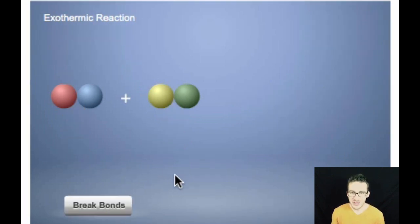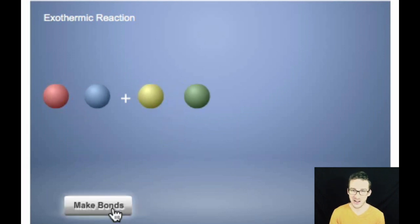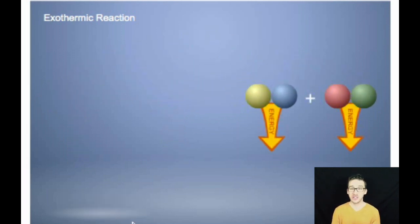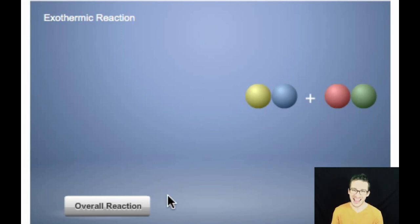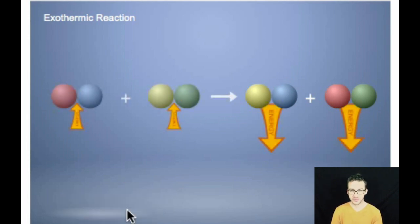So, as you think about an exothermic reaction, again, when we break bonds, we have to put heat energy in. When we form new bonds, energy is released, but in an exothermic reaction, the amount of energy released is greater than the amount of energy we put in to break the original bonds. Therefore, in an exothermic reaction, the enthalpy change is negative, simply indicating that more energy is released than went in to break the original bonds.